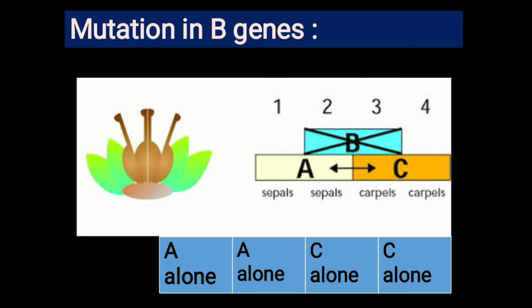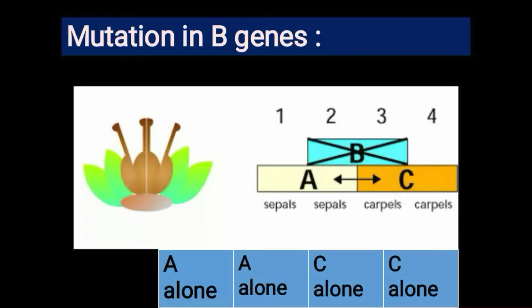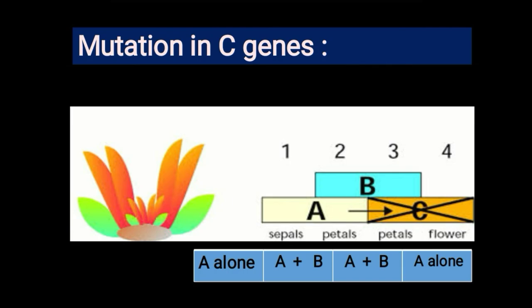Next is mutation in the B gene. If B gene is mutated, A gene and C gene become more active and dominant. These two genes will make all four whorls: two whorls will make sepals and two whorls will make carpels. A flower with a mutated B gene will not have petals or stamens.